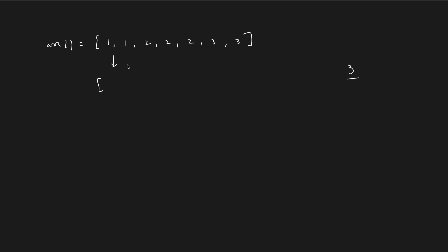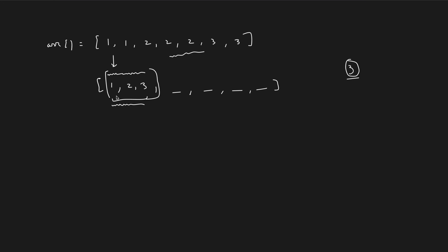Basically, you will be given an array and at the end of the function, you need to return the length of the number of unique elements. You need to place all the unique elements at the front — like 1, 2, 3. So 3 elements are placed at the front. In the remaining places you can place anything you want, it doesn't matter. What they want is that all unique elements come in front, and then the program checks only that portion.